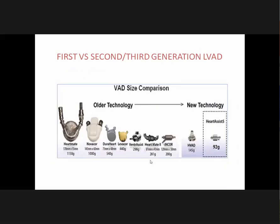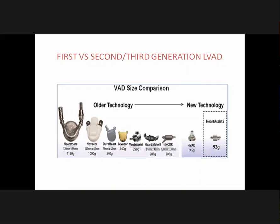Over the last two decades, the first LVAD — HeartMate 1 — weighed around 1.1 kg. The weight has progressively come down, and current devices weigh around 200 to 280 grams. The common first-generation devices are HeartMate XVE — an extracorporeal system — Centrimag right ventricular assist device, Berlin Heart EXCOR — also extracorporeal — and Jarvik 7, which works with a pneumatic drive system.